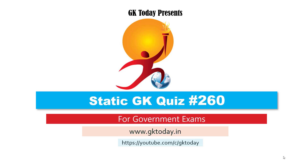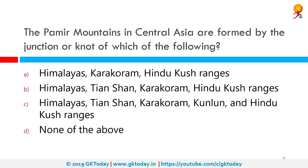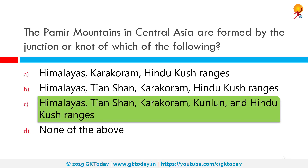The Pamir Mountains in Central Asia are formed by the junction of which of the following? The correct answer is the Himalayas, Tian Shan, Karakoram, Kunlun, and the Hindu Kush ranges. The Pamir Mountains are a mountain range in Central Asia at the junction of all these mountains.